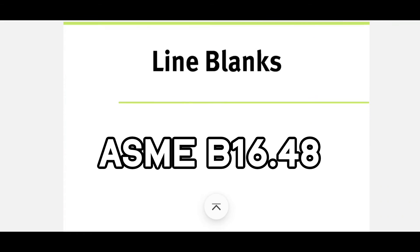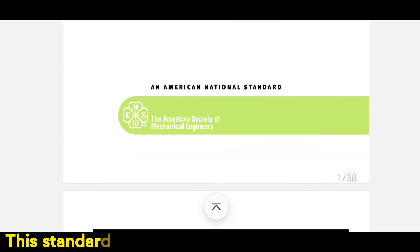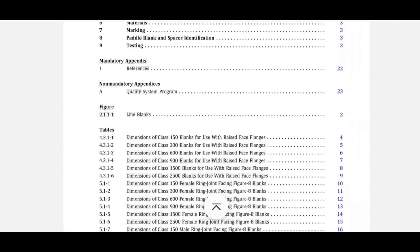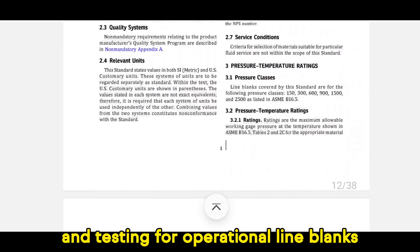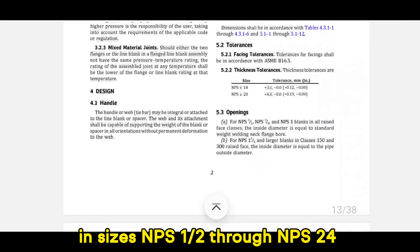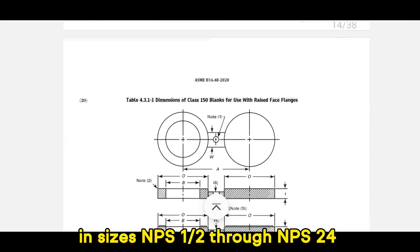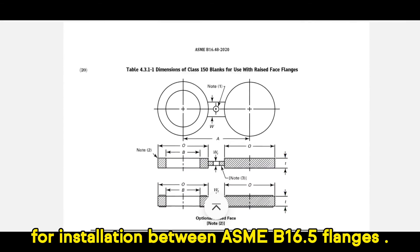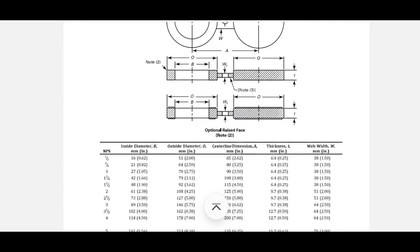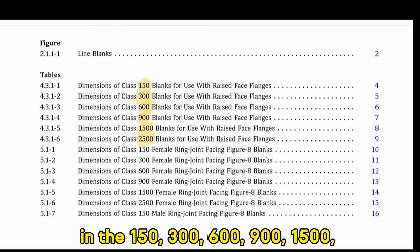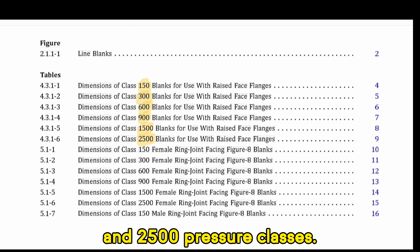ASME B16.48: This standard covers pressure-temperature ratings, materials, dimensions, tolerances, marking, and testing for operational line blanks. It applies to sizes NPS ½ through NPS 24 for installation between ASME B16.5 flanges in the 150, 300, 600, 900, 1500, and 2500 pressure classes.